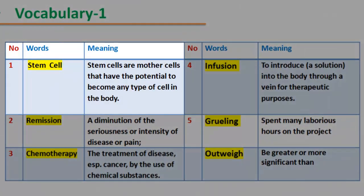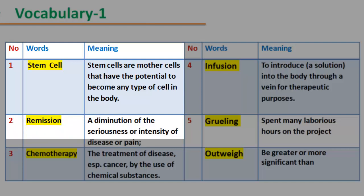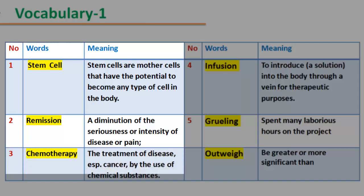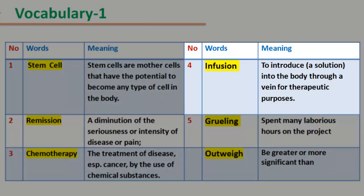Vocabulary 1. Number 1 — Stem cell: stem cells are mother cells that have the potential to become any type of cell in the body. Number 2 — Remission: a diminution of the seriousness or intensity of disease or pain. Number 3 — Chemotherapy: the treatment of disease, especially cancer, by the use of chemical substances.